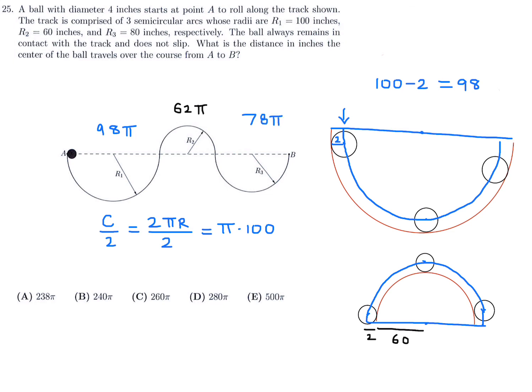That's a cool question — a bit challenging but not too bad. Adding them all up: 98π + 62π + 78π = 238π. That is the total distance the center of the ball travels over the course from A to B. For number 25, that is choice A.